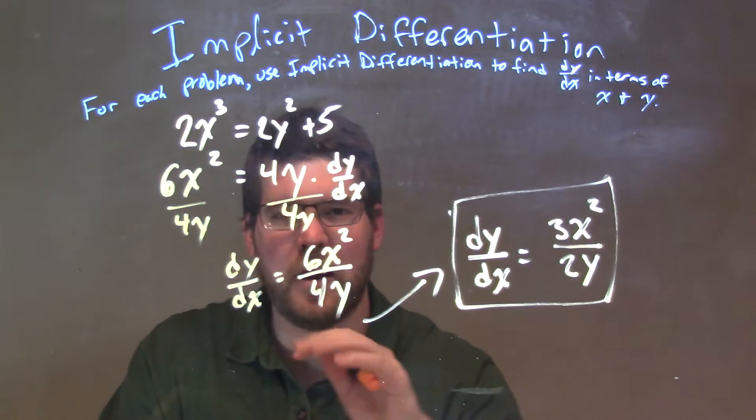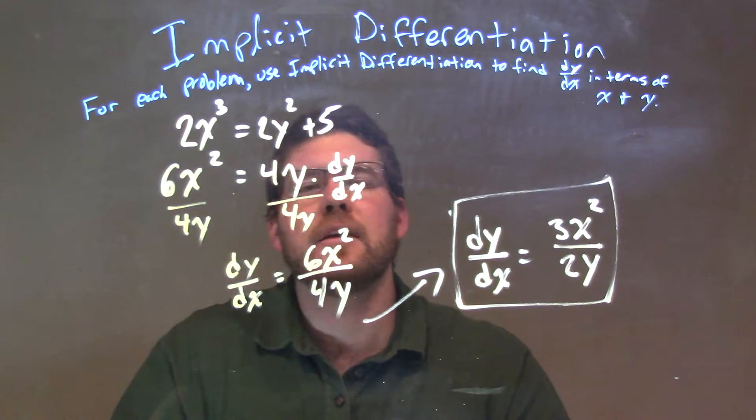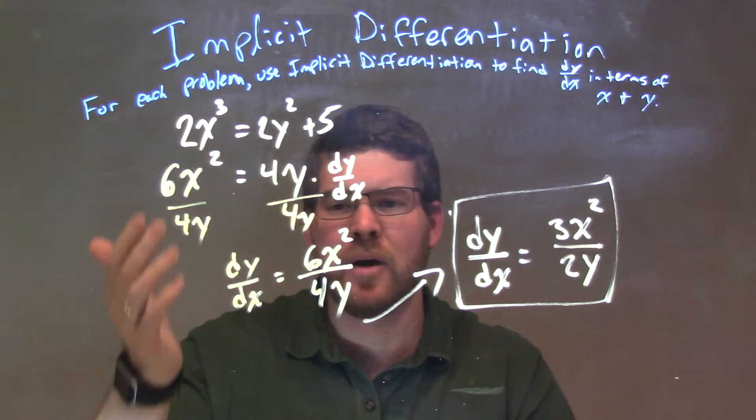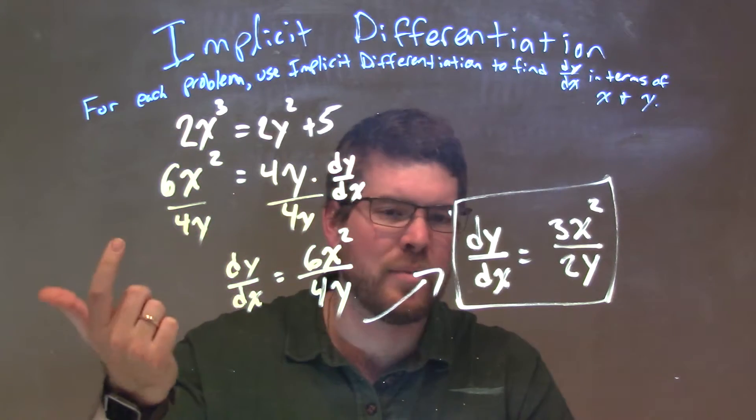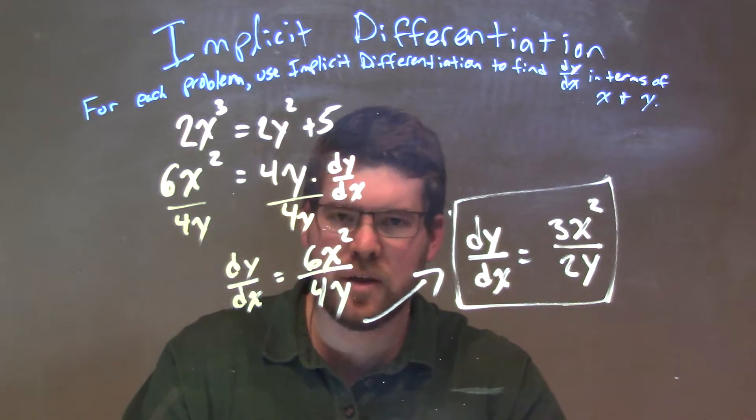We're doing the derivative of y now, thinking like a chain rule—y is some function, which it is. Then, the derivative of 5 is 0. After that, all I did was get dy/dx by itself. I divided both sides by 4y and simplified. Final answer again: dy/dx = 3x² over 2y.